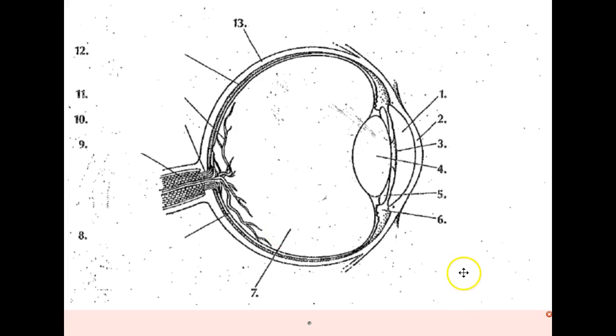Here we are at the structures of the eye. We'll start and just go in numerical order. Structure 1 is the aqueous humor. This is the fluid that's located between the cornea and your iris and pupil. There's a sack of fluid right here and it's called aqueous humor. This structure on the outside is your cornea.